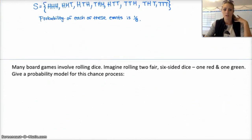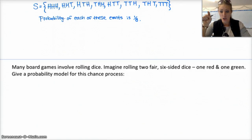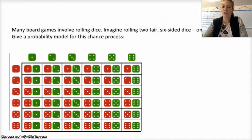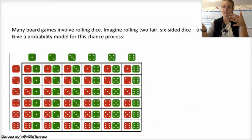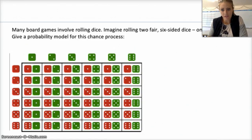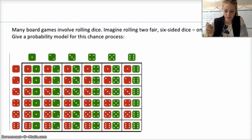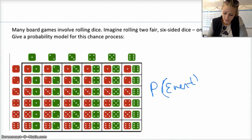Here's another example. Many board games involve rolling dice. Imagine you have two fair six-sided dice, one red and one green. Give a probability model for this chance process. There are 36 different possibilities — you could have a one and a one, or a one and a two, or a two and a one, and so on. The probability of each individual event occurring is one out of 36.